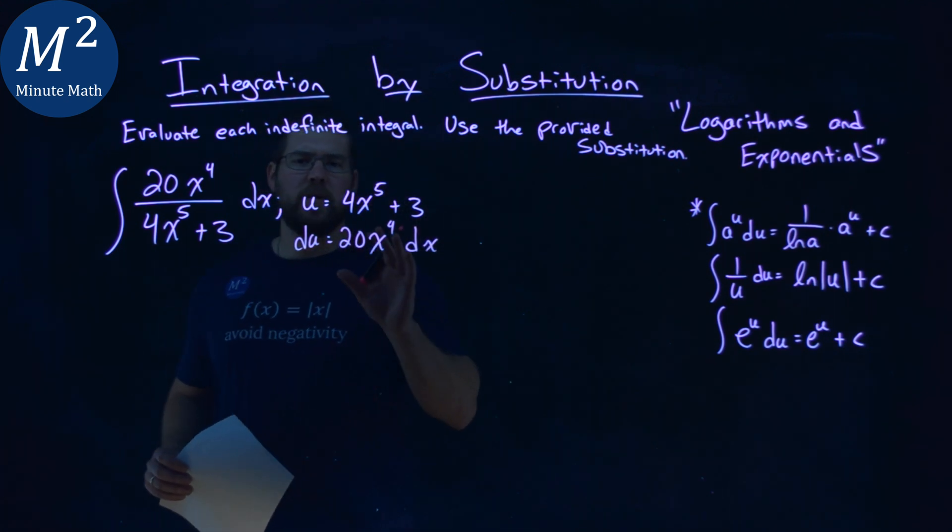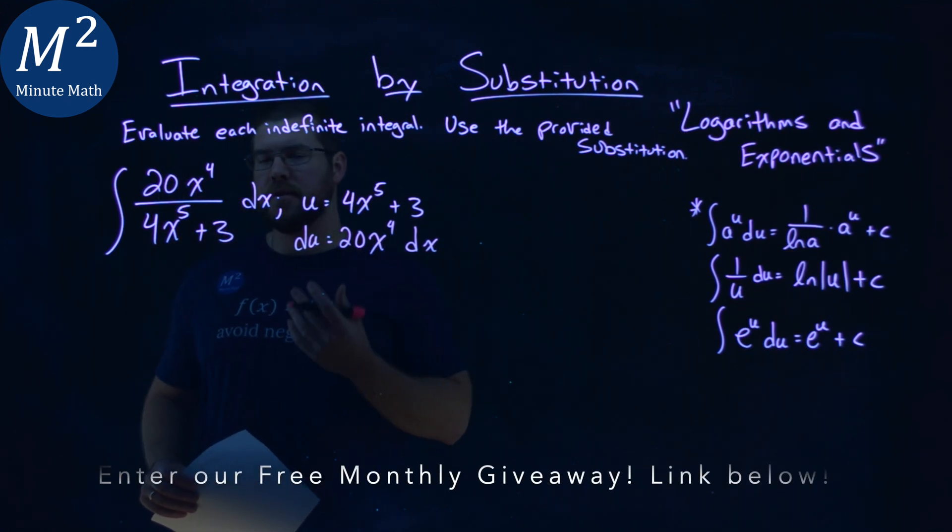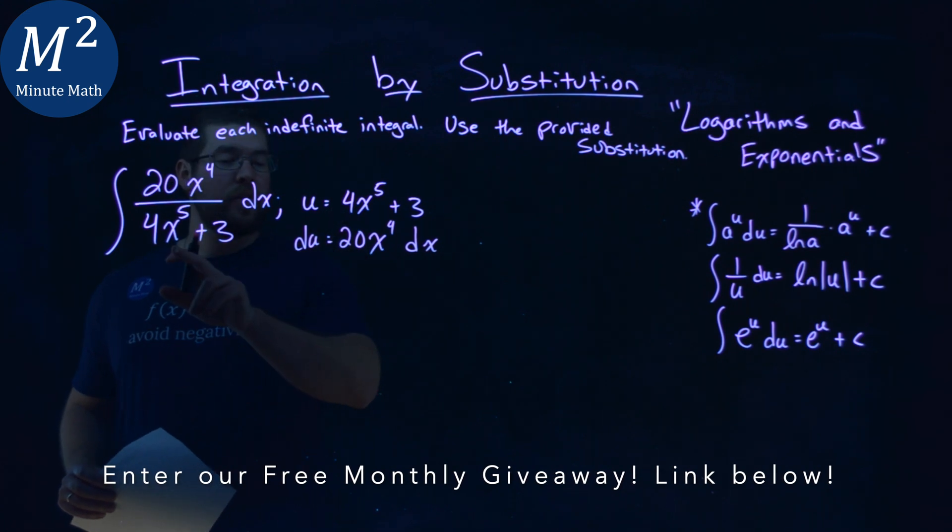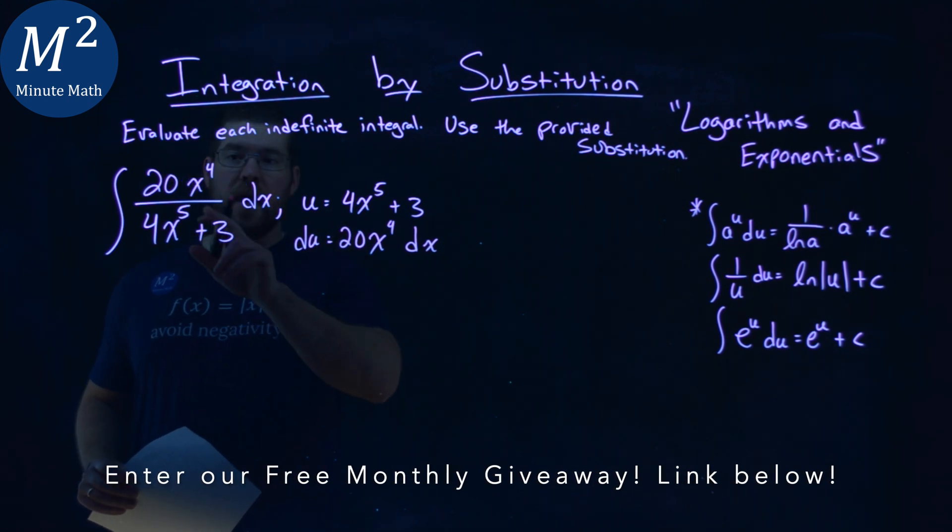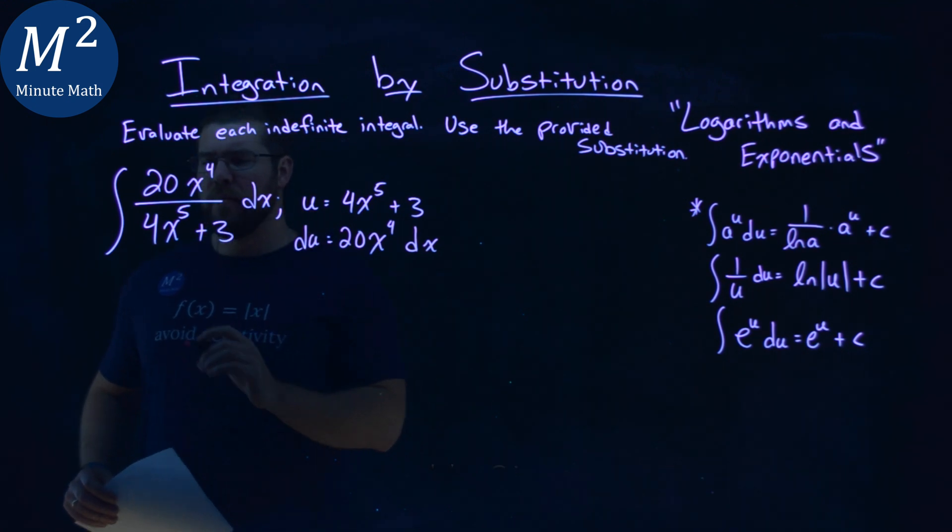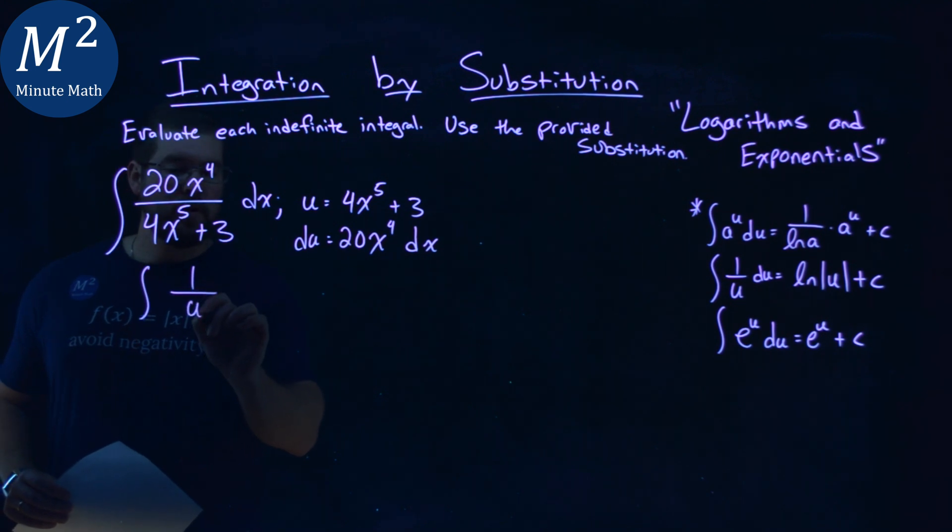And so here we're trying to see if we can rewrite this derivative with respect to x to be something with respect to u. And notice here, if u is that 4x to the fifth plus 3 in the denominator, and our du is 20x to the fourth dx, we can make this integral look like 1 over u du.